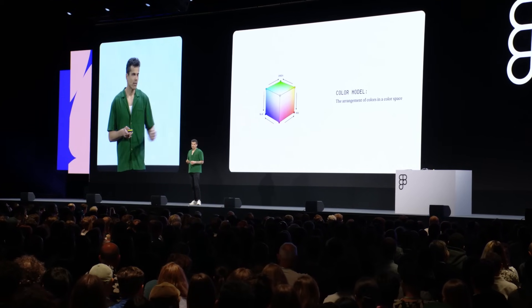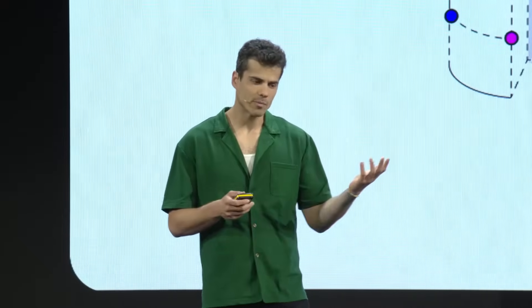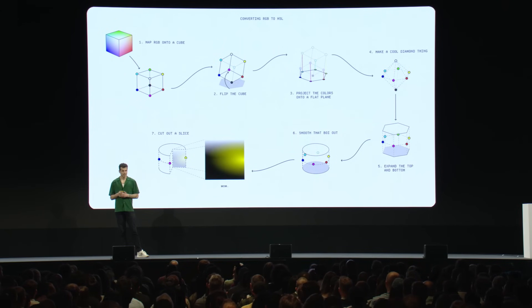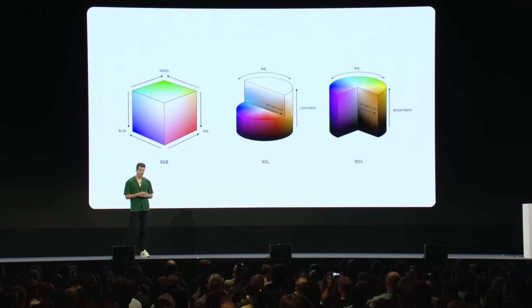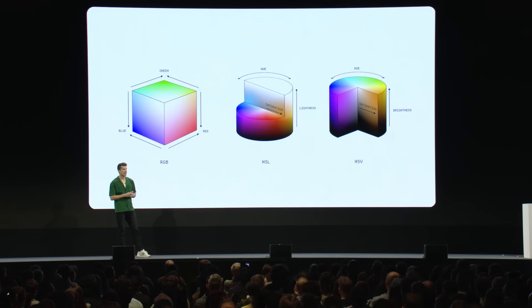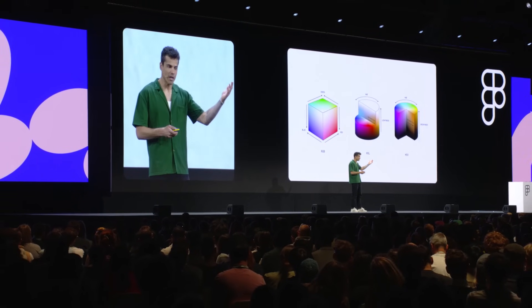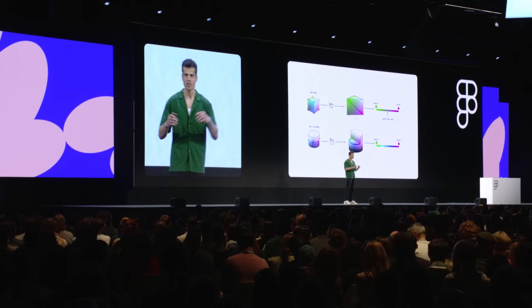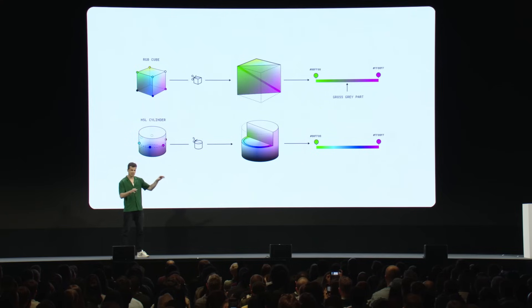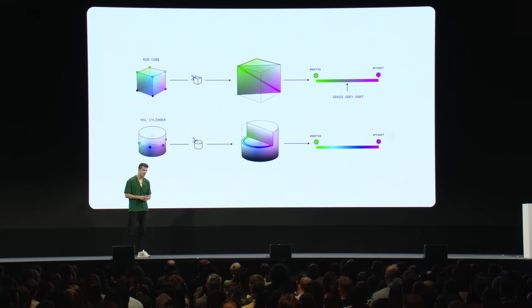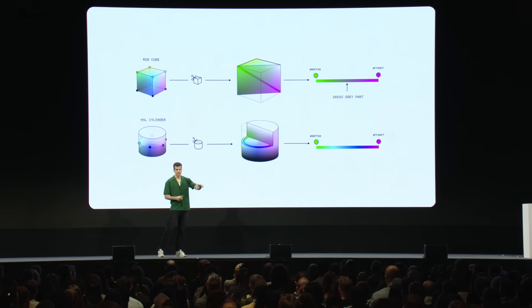But you can arrange that same set of colors in a cylinder, if you'd prefer, and if you're comfortable doing some geometry. This is the HSL cylinder, and it allows us to talk about color in a more human-friendly way — we talk about hue, saturation, and lightness values instead of red, green, and blue. Both the RGB cube and the HSL cylinder aren't color spaces themselves; they're just arrangements of a given color space, in this case sRGB. The way you arrange the colors is important for things like gradients, because it changes the distance between points and what falls between them — that's why in the RGB cube we sometimes get a gross gray part in a gradient, but in the HSL cylinder we can completely sidestep that problem.